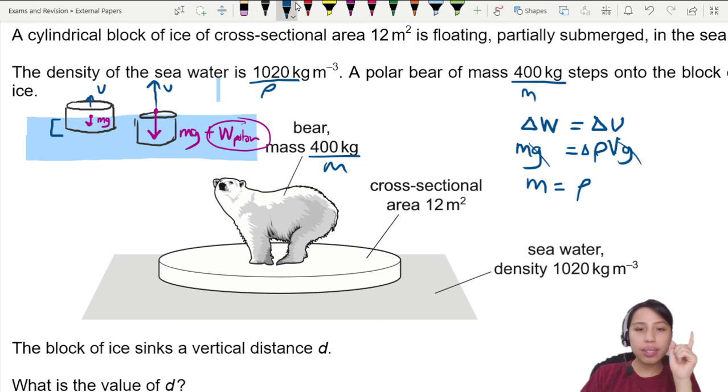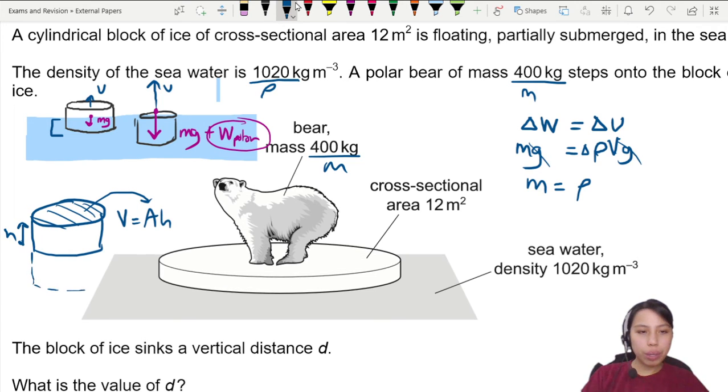So all we have left is mass equals rho times the change in volume. Here we don't have anything about volume, but we want to see how much the block sinks in, so we can consider the volume of a cylinder which is going to be the cross-section area A times the height. So the change in height, maybe it was originally this tall, we just want to find what's the small change in height or change in length.